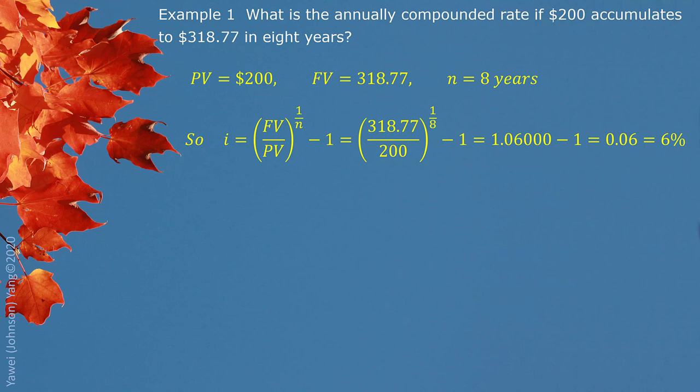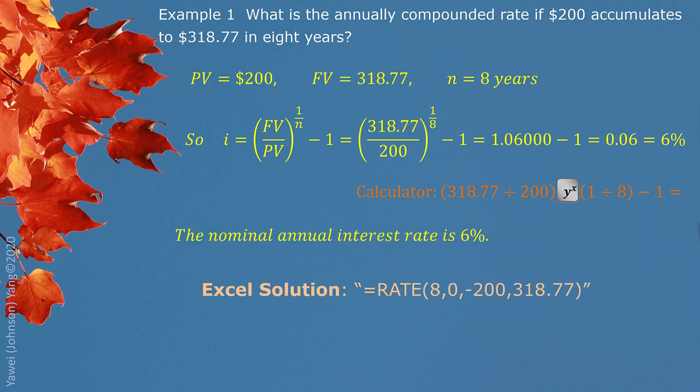6% is periodic interest rate, but compounding period is year. So 6% is the annual interest rate we're looking for. If you do use calculator, here's how you operate this calculation from your calculator. And we can also give you the Excel solution. You can use the rate function, get the answer right away. Here's how you put the information in. You definitely need to try it out in Excel.